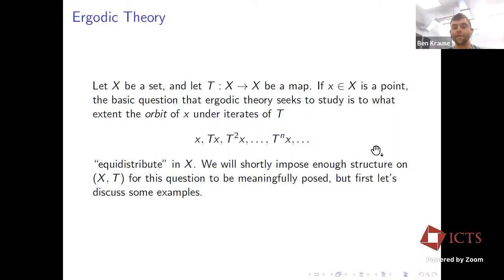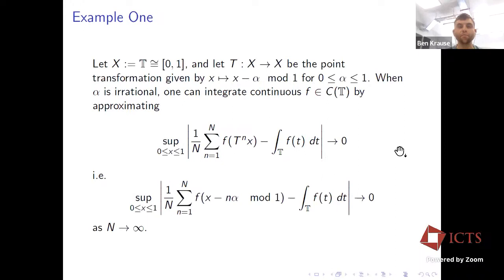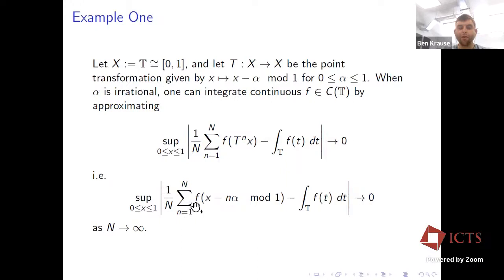I'm going to begin with the two examples of pointwise ergodic theory that I learned at the beginning of grad school, which really got me interested in the field. The first example is the case of the torus with the irrational rotation. If I have a continuous function, then for every single physical location X that I start with, I can recover the integral — the space average of my function — using this dynamical process. I pick X, rotate by alpha, evaluate, rotate by alpha again, evaluate, and so forth.